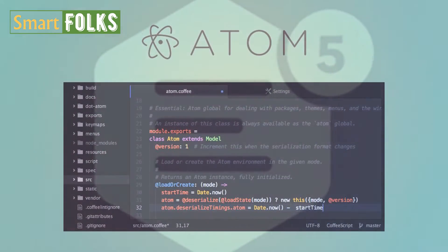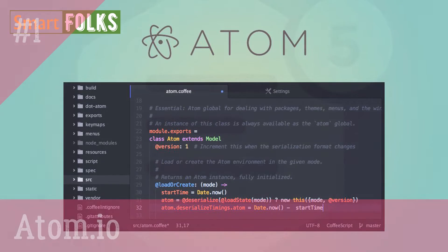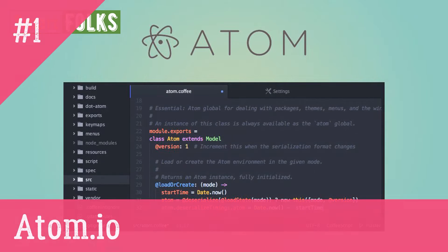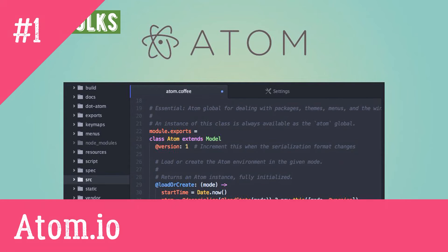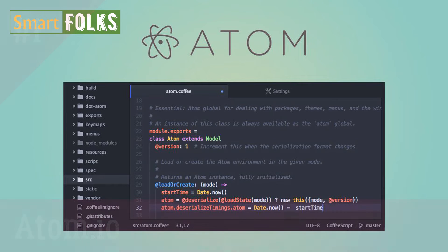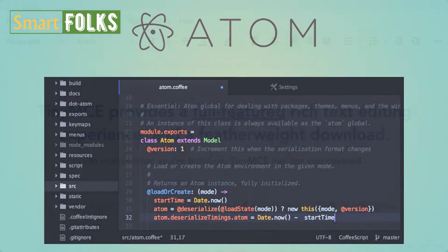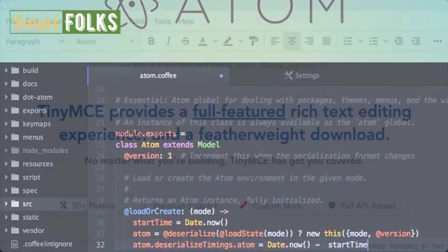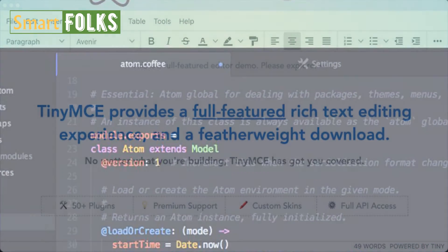1. Atom.io. For macOS, Linux, and Windows, Atom is a free and open-source text and source code editor that has in-built Git control and support for JavaScript plugins. Atom is a desktop program created by GitHub that makes use of web technology.